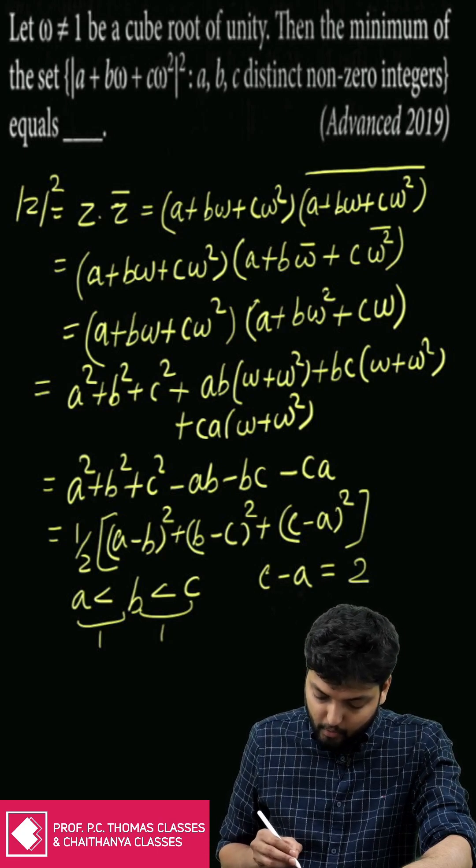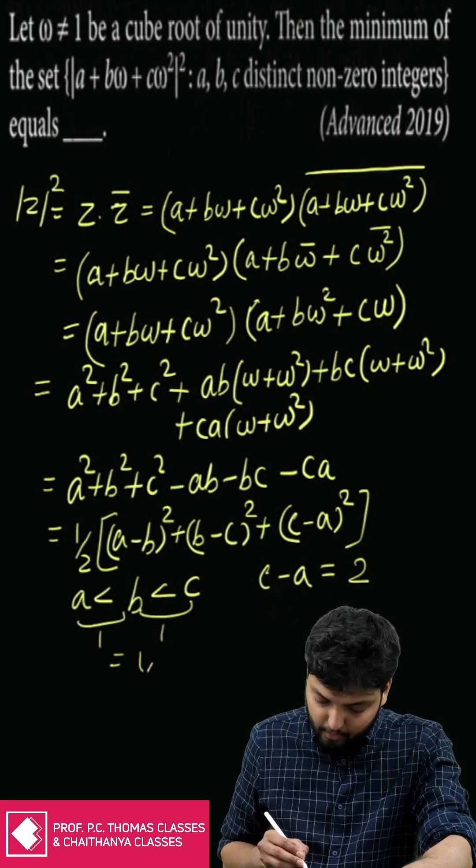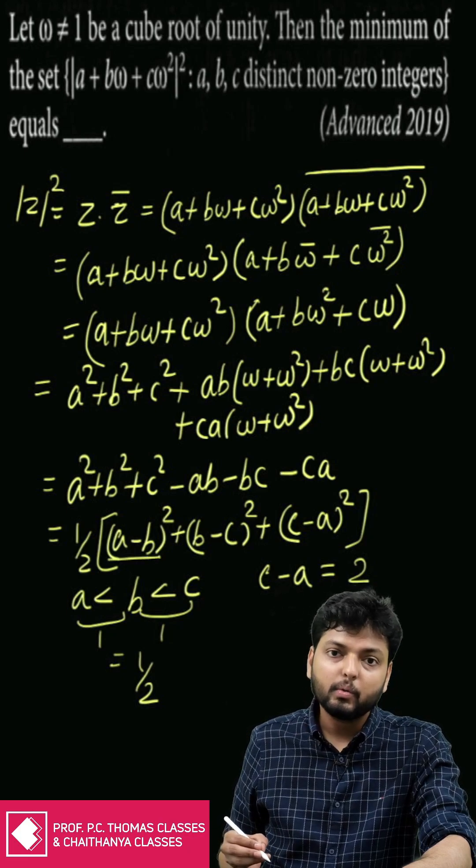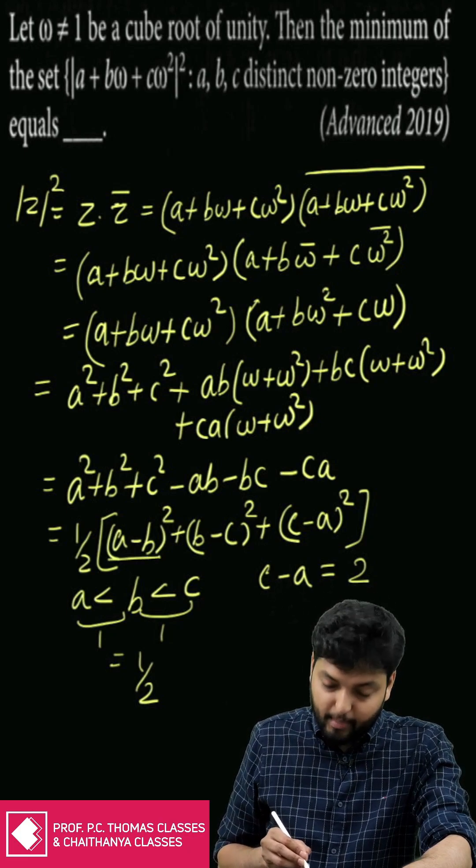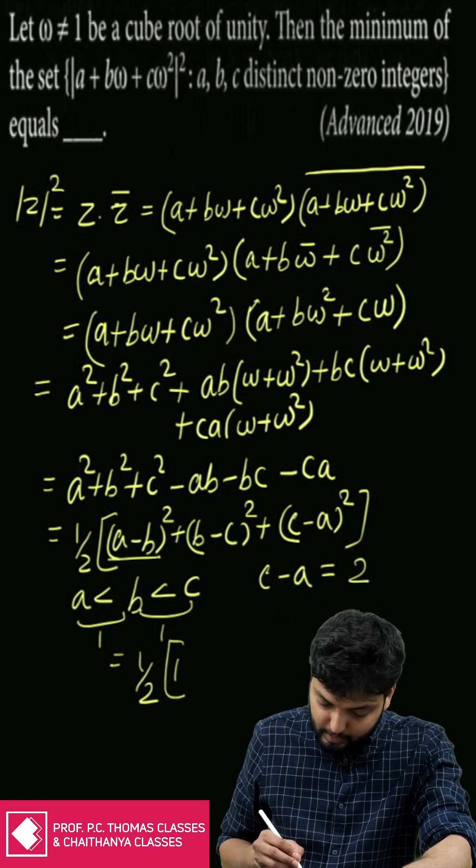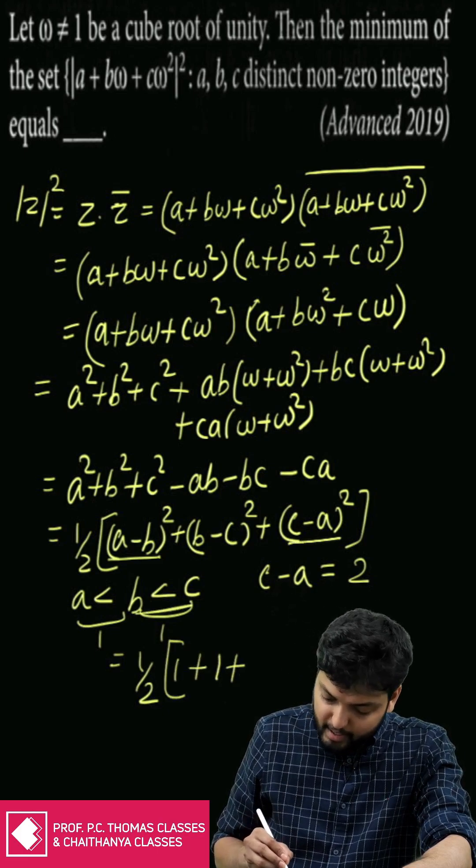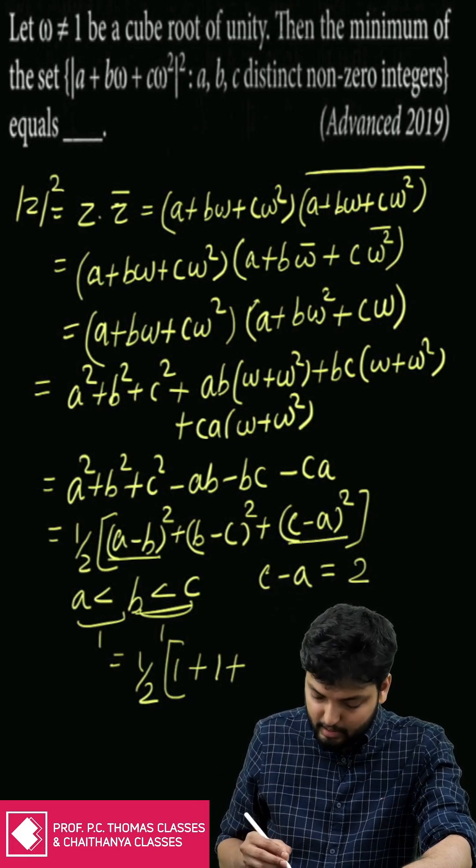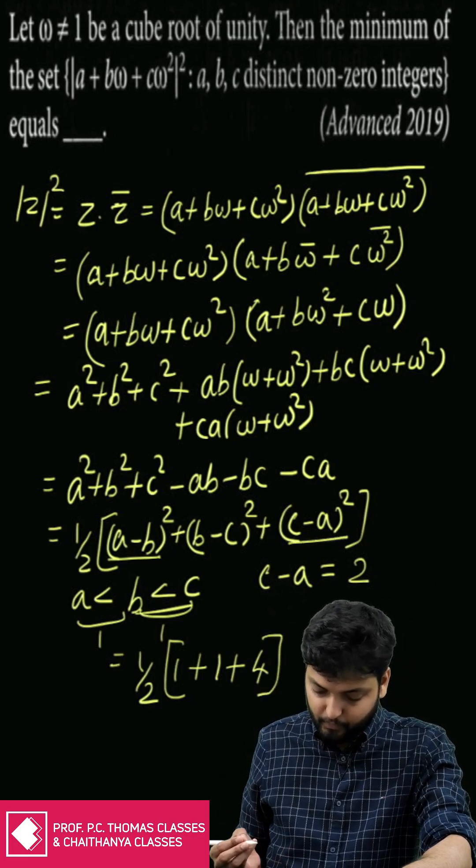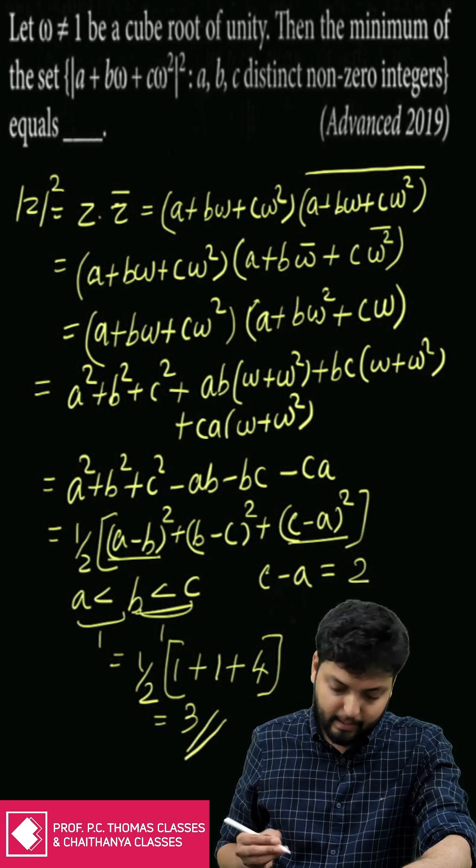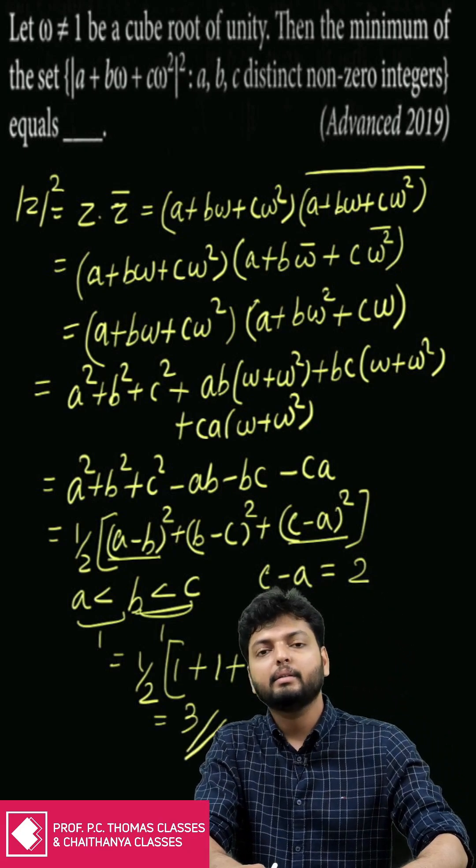This will come out to be ½[(a - b)² + (b - c)² + (c - a)²]. Since (a - b)² equals 1, (b - c)² equals 1, and (c - a)² will be 4, this gives the answer three.